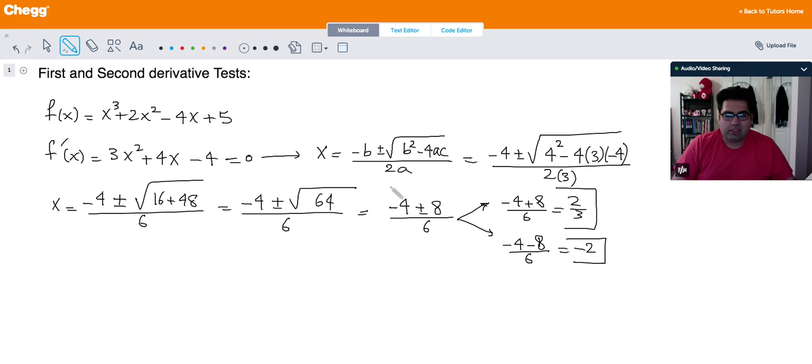That was the first derivative test that we are basically finding the extremas. If you want, you can actually use a table, that's basically part of first derivative test, that you determine where the function is increasing or decreasing, and then based on that, you can find it's either max or min.